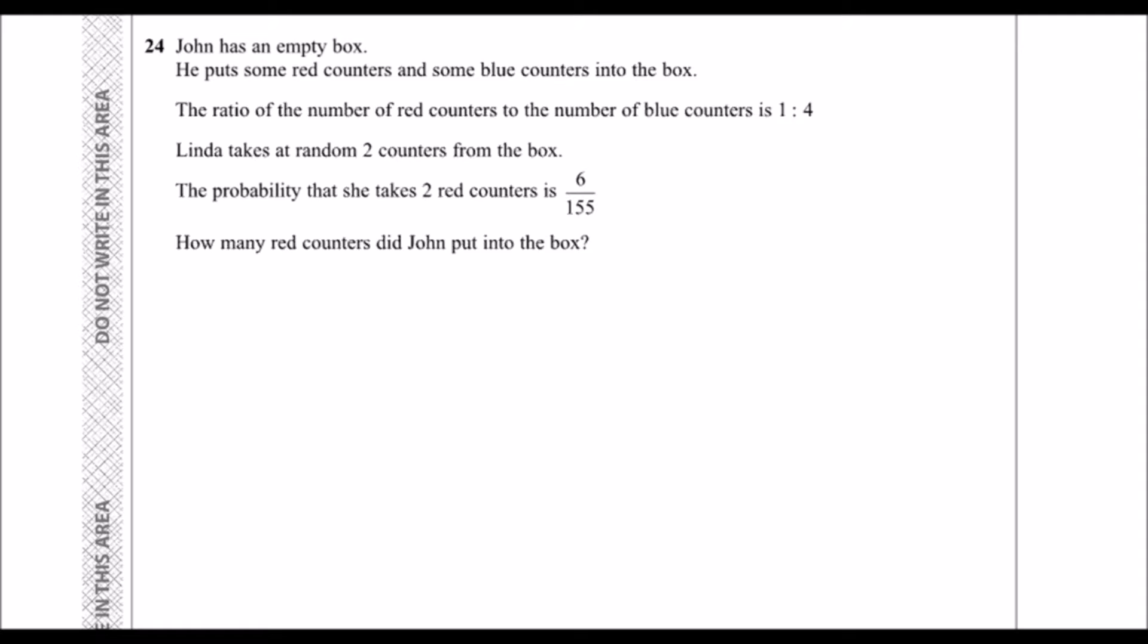So we don't know exactly how many there are, but we know there's four times as many blue as there are red. Linda takes two counters from the box. The probability she takes two red counters is six over 155. How many red counters were in the box?